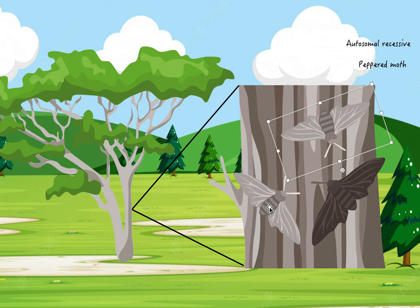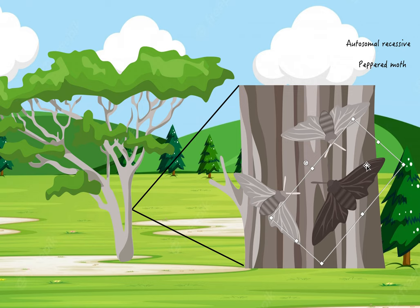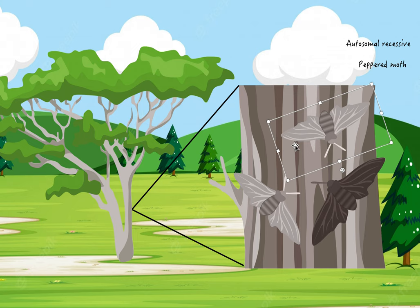We call this a peppered moth, this one here. Now, as I said, these white, gray ones can camouflage well, and so they will survive and pass on their genetics. So in this environment, long time ago, the white peppered moth was way more common because it kept surviving and passing on its genetics. Whereas these black ones kept dying, and so they ended up being very scarce.